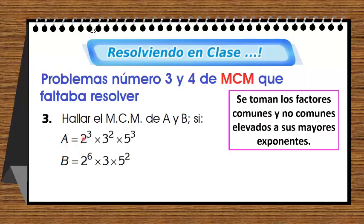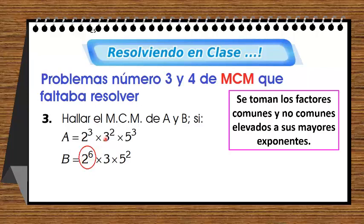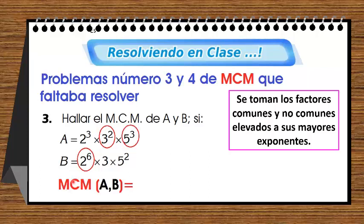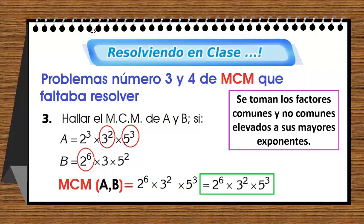Comenzamos con el 2: el factor primo 2 con su mayor exponente. ¿Tomo 2⁶ o 2³? Tomo 2⁶. Con el factor primo 3: ¿3² o 3? Tomo 3². Con el 5: ¿5³ o 5²? Con su mayor exponente, tomo 5³. Entonces el mínimo común múltiplo de A y B es 2⁶ × 3² × 5³.